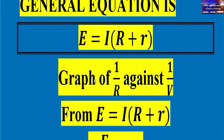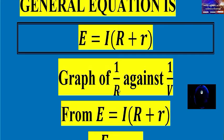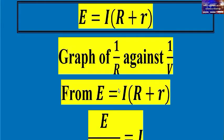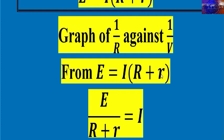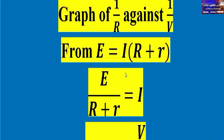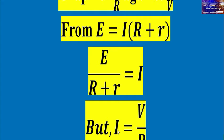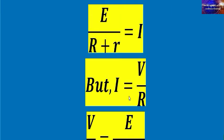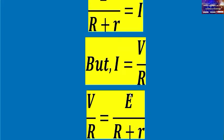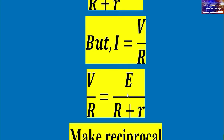We need to plot a graph of 1/R against 1/V, so we must derive the general equation to reach that form, where 1/R is the y-axis and 1/V is the x-axis, to get a linear equation. Starting from EMF = I(R + r), current I = EMF / (R + r). Since I = V/R, we substitute V/R for the current.